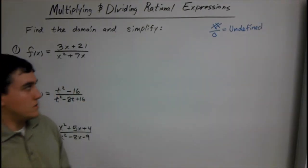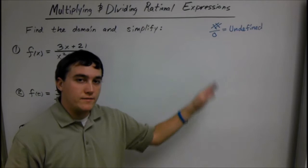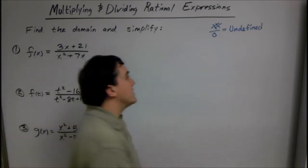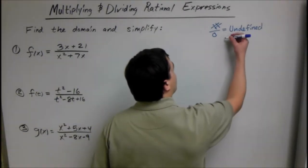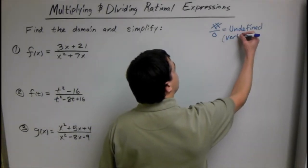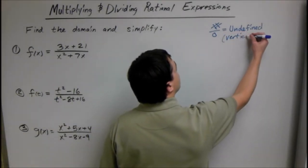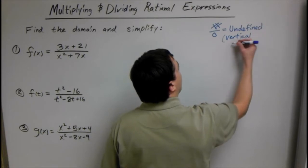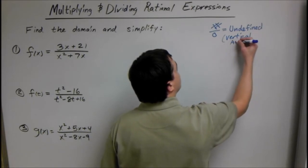So when you're graphing, if it's undefined, this is also known as a vertical asymptote.